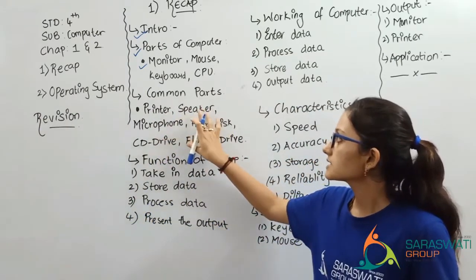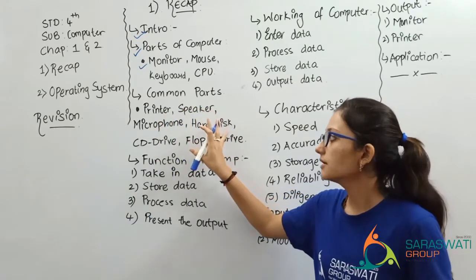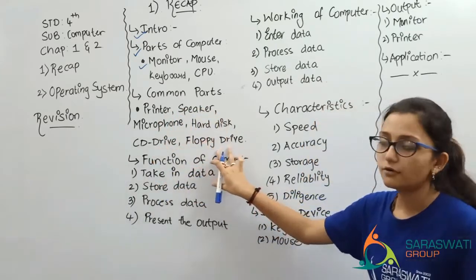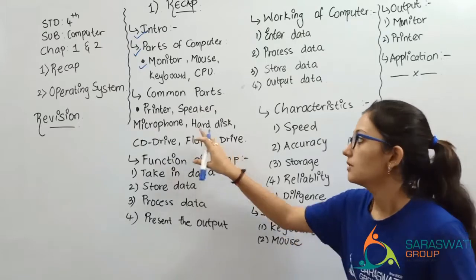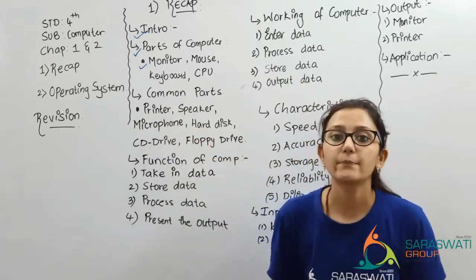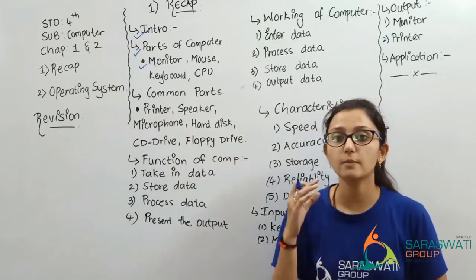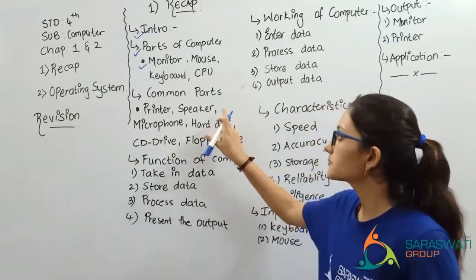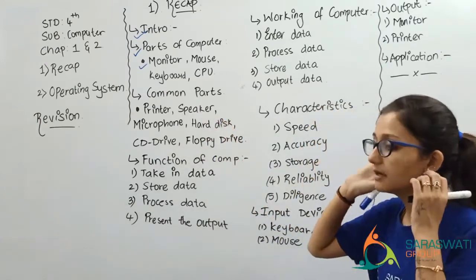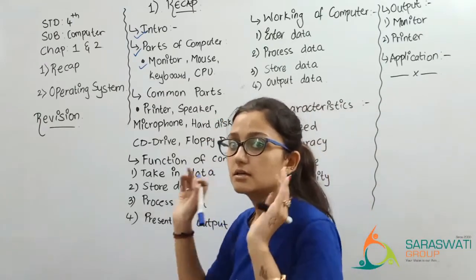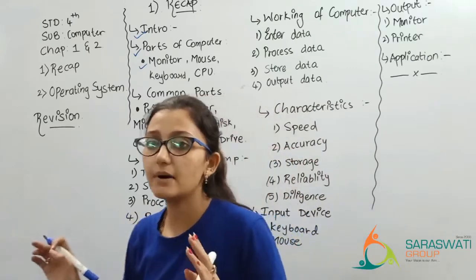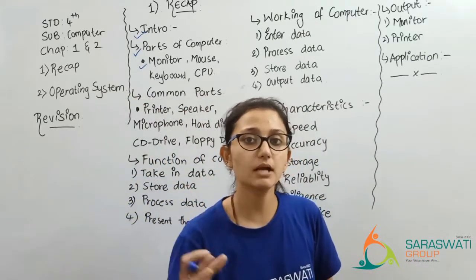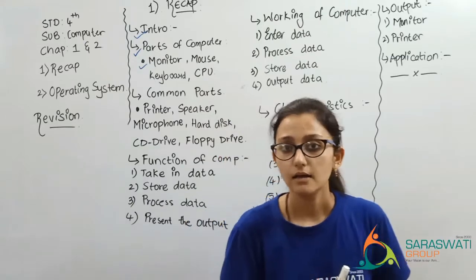Other common parts include: printer, which gives us a printout on paper; speaker, which produces audible sound; and microphone, which records what you speak.